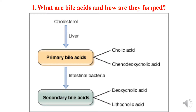Bile acids are formed from cholesterol in the liver. First, primary bile acids are formed — these include cholic acid and chenodeoxycholic acid. These are further processed by intestinal bacteria and converted to secondary bile acids, which include deoxycholic acid and lithocholic acid. So there are four bile acids in total: the primary ones are cholic and chenodeoxycholic acid, and the secondary ones are deoxycholic and lithocholic acid.